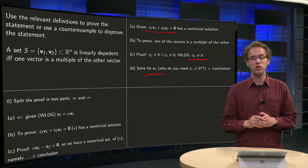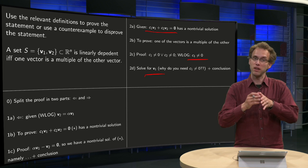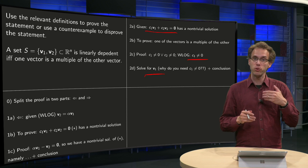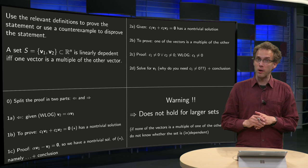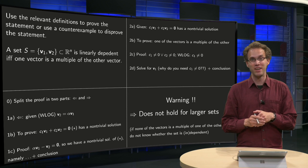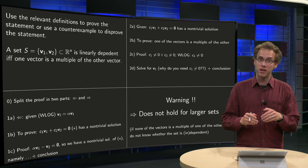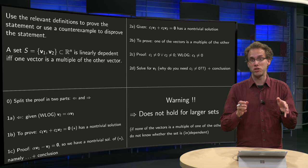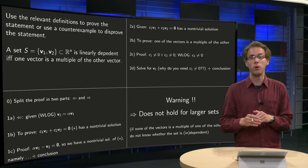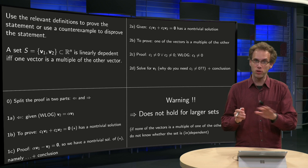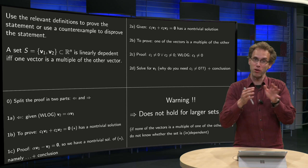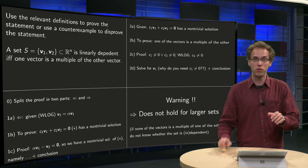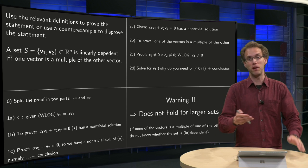Now, this theorem also holds for larger sets — so given a set of 3, 4, or 5 vectors, do you also have that the set is dependent if and only if one of the vectors is a multiple of the others? Well, I hope you said no, because this is a very dangerous one. The theorem does not hold for larger sets. If none of the vectors in a larger set is a multiple of the others, you still do not know whether the set is dependent. If one of them is a multiple of the others, you are done — but it's unfortunately often used incorrectly the other way around. So don't do that. With larger sets, even though none of the vectors are multiples of the others, you still do not know whether your set is dependent or independent.